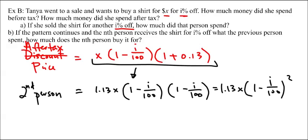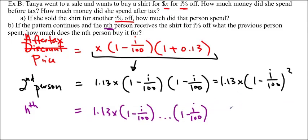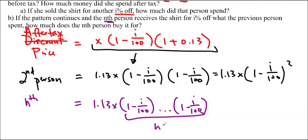Now, the last part of this question asks us, if the pattern continues, the nth person receives the shirt for I percent off. What the previous person spent, how much does the nth person buy it for? So, we're multiplying 1 minus I over 100 times 1 minus I over 100 times 1 minus I over 100. And you can see that for the second person, I've got it two times. So, for the nth person, I must be multiplying it n times. So, it's 1.13X times 1 minus I over 100. And this is going to happen n times. And that ends up simplifying to 1.13X times 1 minus I over 100 to the n.